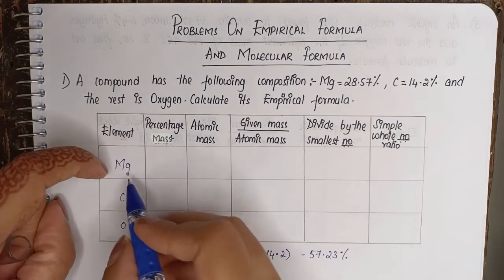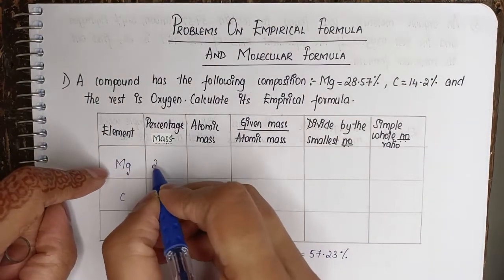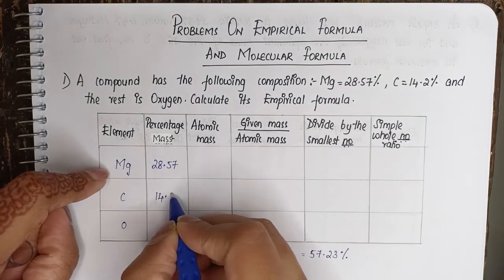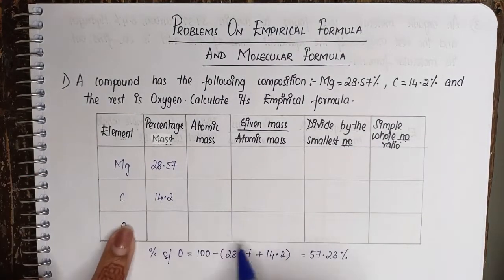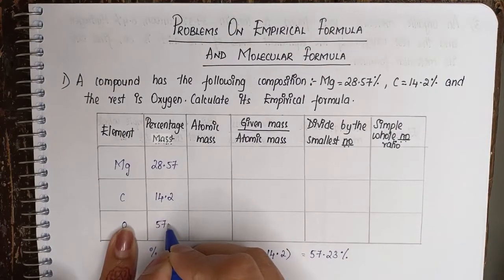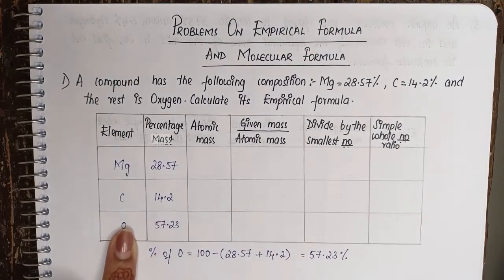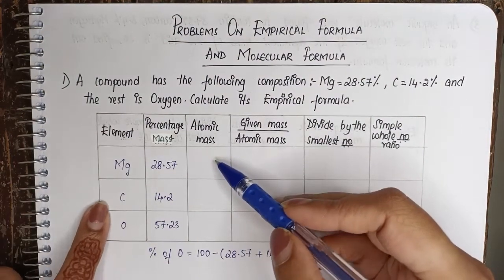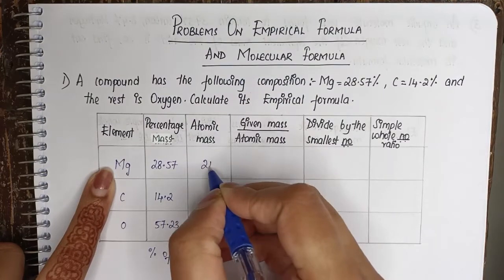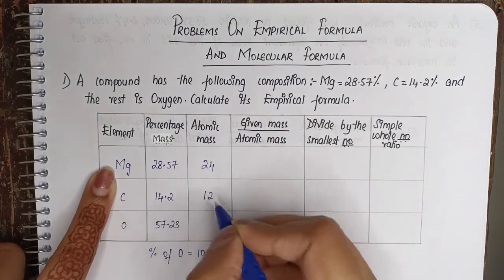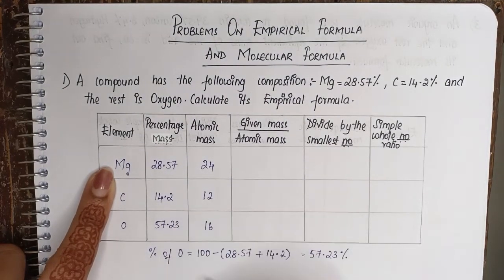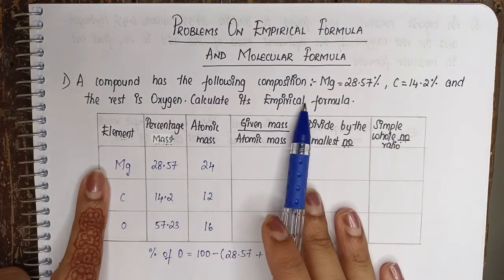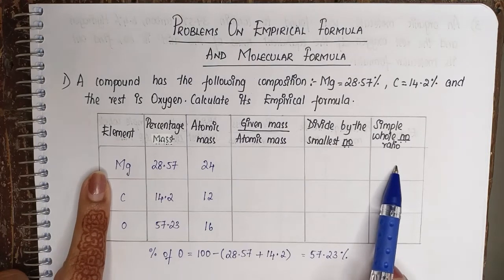Now, percentage of magnesium is 28.57, carbon is 14.2, oxygen we just calculated is 57.23. The second column is atomic mass of all these. Atomic mass of magnesium is 24, carbon is 12, and oxygen is 16. So the first three columns are basically whatever is in the question. The remaining three is what we have to calculate.